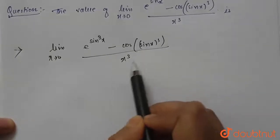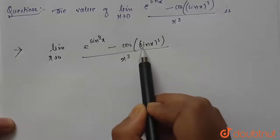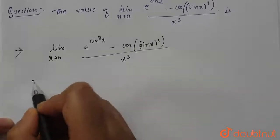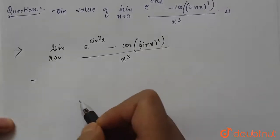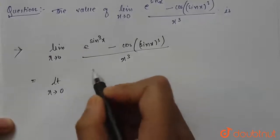is also 1, so 1 - 1 is 0. We get a 0/0 form, so we can use L'Hospital's rule. After using L'Hospital's rule, we get limit x tends to zero: e^(sin³x) ·